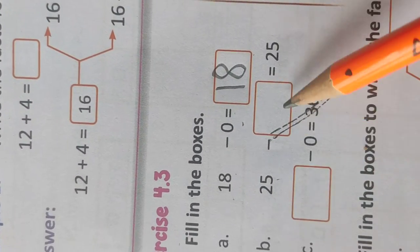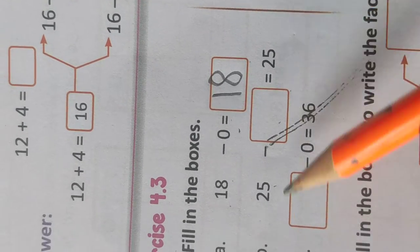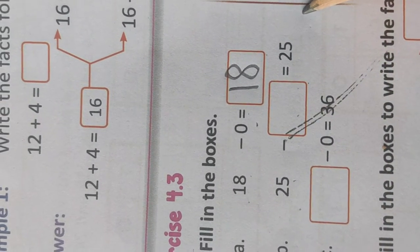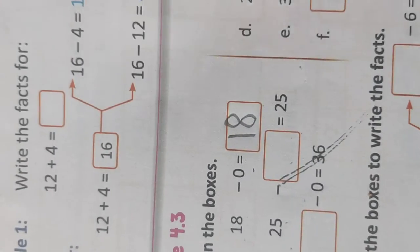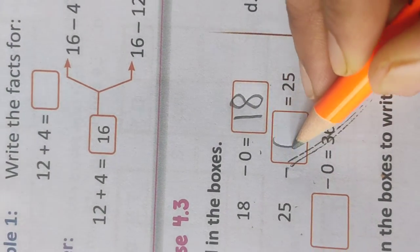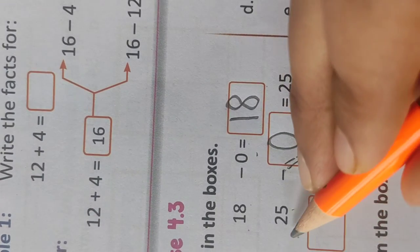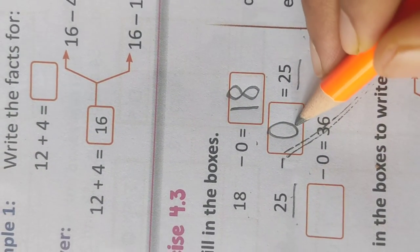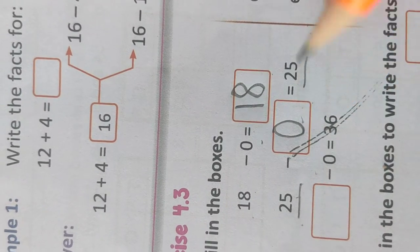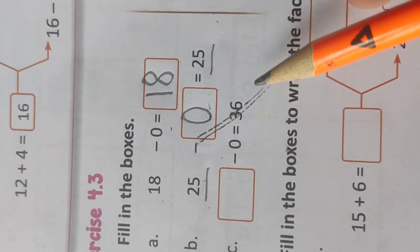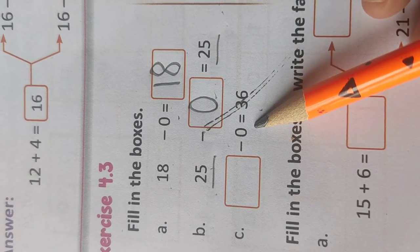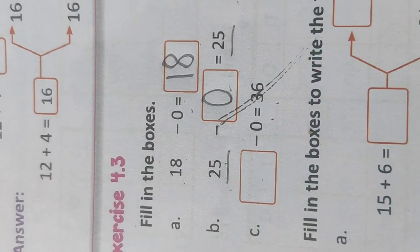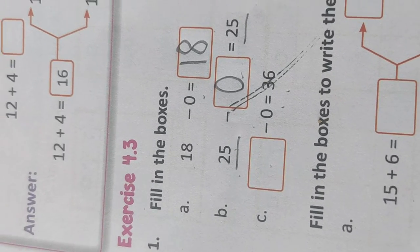Here, 25 minus dash equals 25. So what should be subtracted from 25 so that we are getting the same number as the answer? There is no subtraction done because we have not taken anything. So we should write 0 here in the box given. Similarly, in the next one, 36 is the answer and we are subtracting 0 from the given number. So what should be the given number? Given number should be 36.